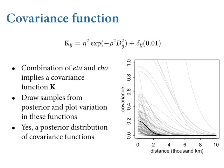Any combination of eta and rho implies a covariance function K, and we can plot that out. We take samples from the posterior distribution and plot the covariance functions — and that's what I've done on the right-hand side of this slide. The thick one is the posterior median, giving some idea of the center of gravity in the posterior distribution. There's a whole range — a lot of posterior functions with less covariation at close distances, and a lot that have more, with a really long tail of extraordinary covariances over distance that are unlikely. By the time you get to about 4,000 kilometers, the vast majority of the posterior distribution decays to nearly zero covariance. By 6,000 kilometers, there's only a tiny wisp with any covariance remaining, which is basically Hawaii.